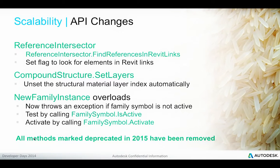In Revit 2016, the Reference Intersector provides a flag used to switch on searches for elements in Revit links. There's also a change to the compound structure SetLayers method which automatically unsets the structural material layer index. The new family instance will throw an exception if a family symbol is placed that has not yet been activated. You can check this by testing the isActive predicate, or activate a symbol before placing it by calling the Activate method.